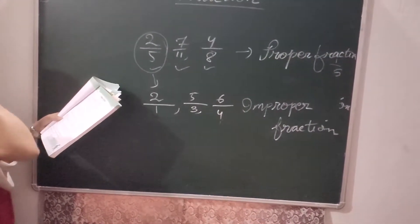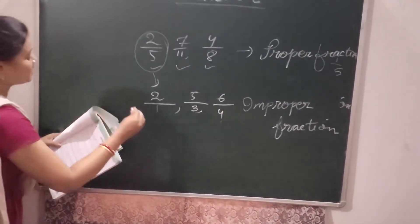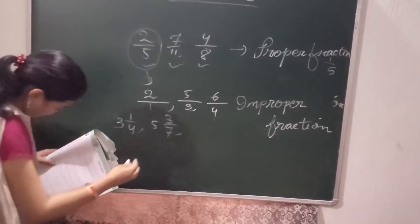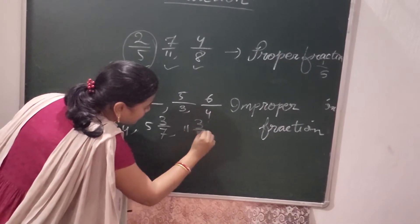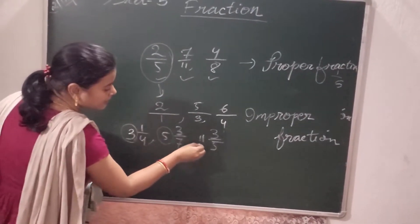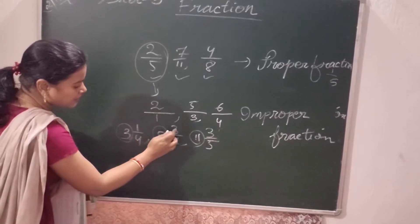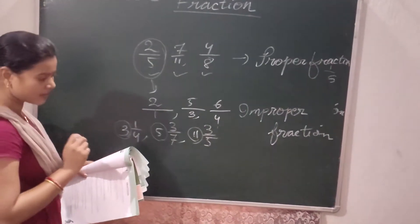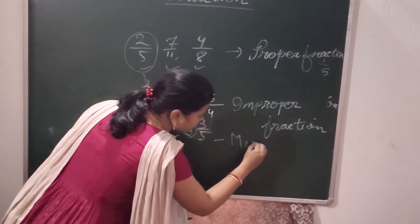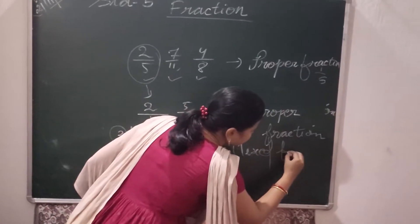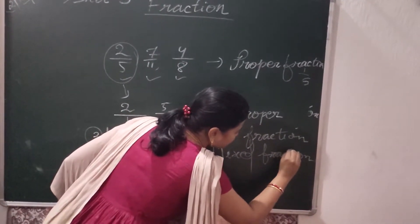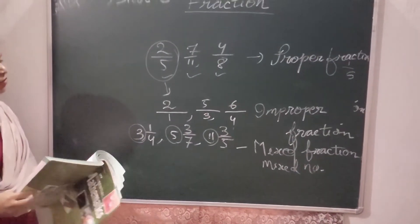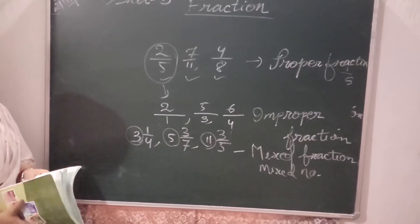This type of fraction is called a mixed fraction: 3 and 1 by 4, 5 and 3 by 7, 11 and 3 by 5. Here 3, 5, 11 are the whole numbers and 1 by 4, 3 by 7, 3 by 5 are the fractions. So these numbers are called mixed fractions or mixed numbers.